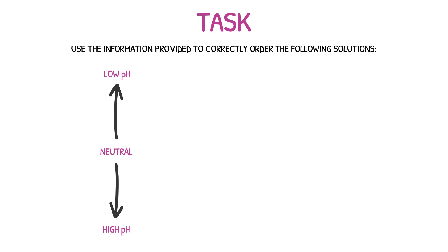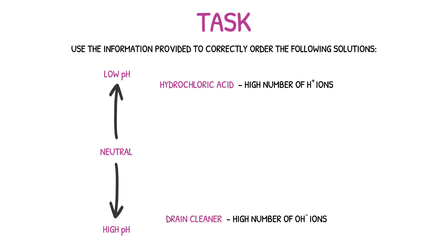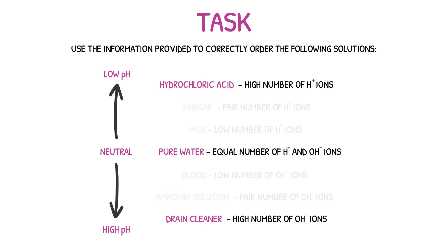We'll start by arranging the most acidic and alkaline substances. Acidic substances release hydrogen ions, where the strength of the acid increases as the number of hydrogen ions increases. Based on this logic, hydrochloric acid is going to be the strongest acid of this list as it has the highest number of hydrogen ions. Alkalines release hydroxide ions, where strength increases as hydroxide ion count increases — drain cleaner is the strongest alkali as it has the highest number of hydroxide ions and will be placed at the highest pH. Water is our neutral substance as it contains an equal number of hydrogen and hydroxide ions.